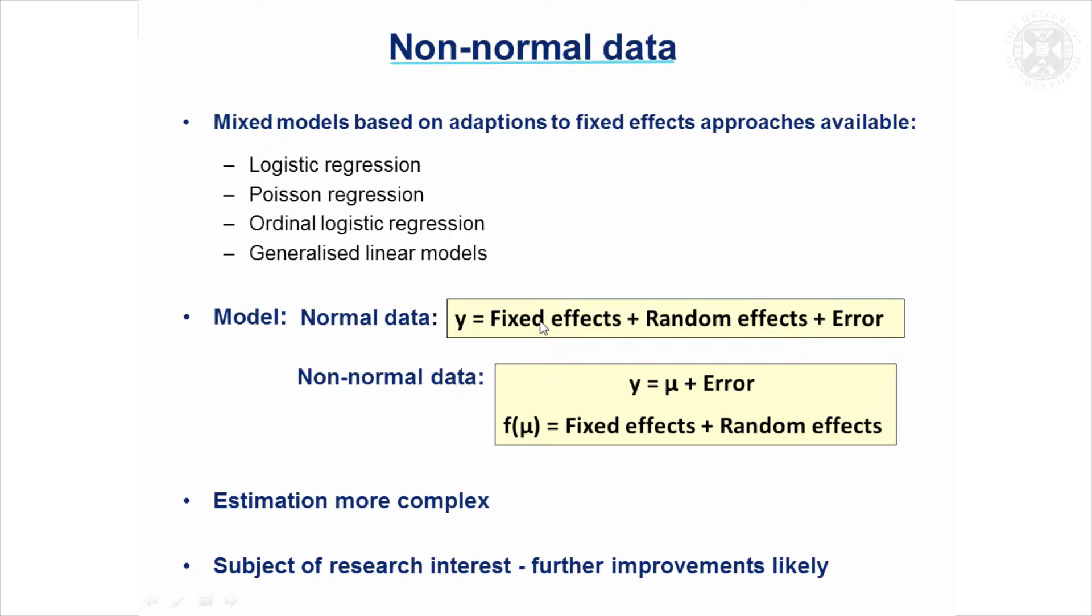But it's really just to say there are equivalent models available for non-normal data. They're largely based on adapting approaches such as logistic regression, Poisson regression, ordinal logistic regression. If you've come across a more general framework for these models, generalized linear models can be used for data with different distributions.